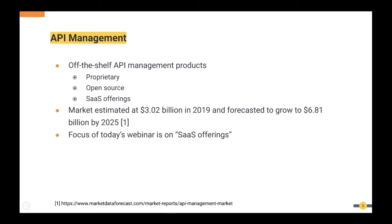Off-the-shelf API management products were introduced. There are three types of solutions: proprietary products, open-source products, and SaaS offerings. A SaaS offering means some vendor is hosting an API management solution as a service to be consumed by users. The API management market was estimated at around $3 billion in 2019 and is forecasted to grow to $6.8 billion by 2025. The focus of today's webinar is on SaaS offerings.